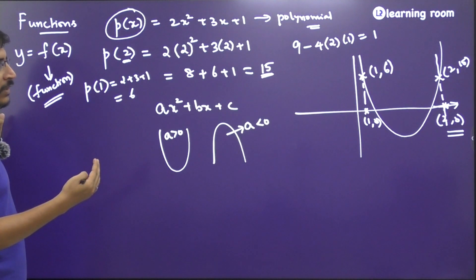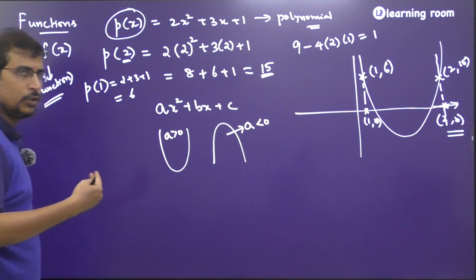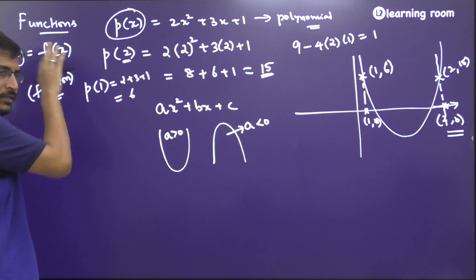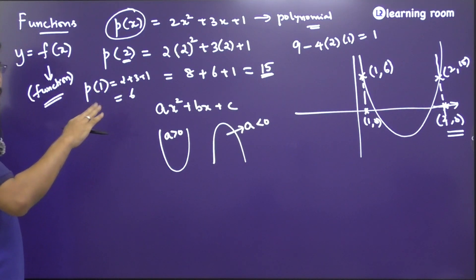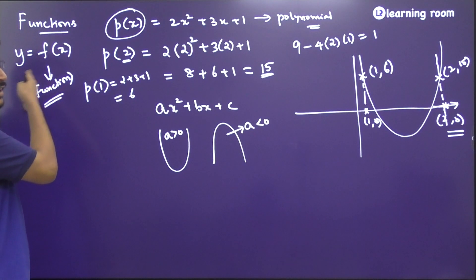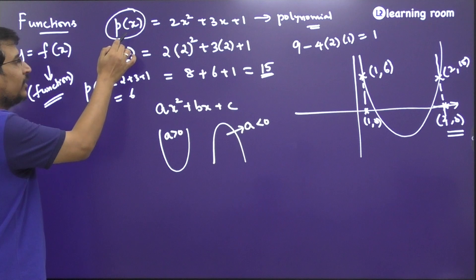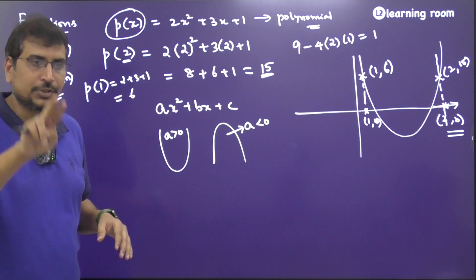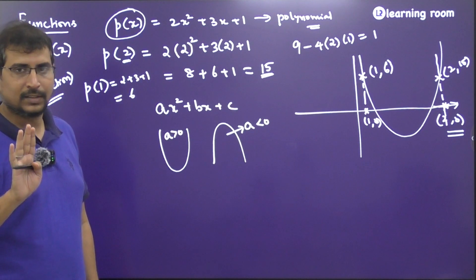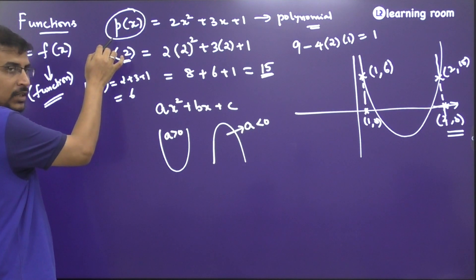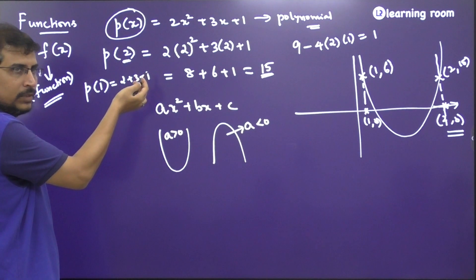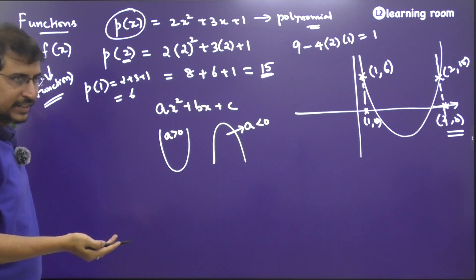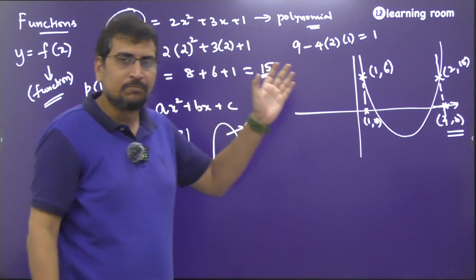A function behaves such that you give one input and get one output. Input is x, output is y. Depending on what kind of function you define, you give it a prefix. For example, what you learned as a polynomial in ninth grade becomes a polynomial function in 11th grade. Similarly, y = sin(x) or y = tan(x) are trigonometric functions. If one value depends on another, it is called a function.